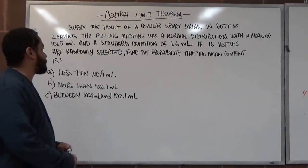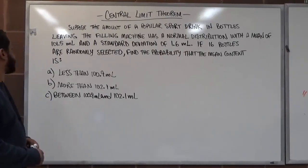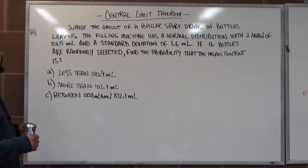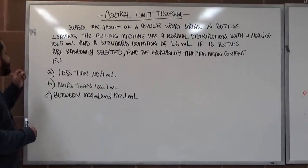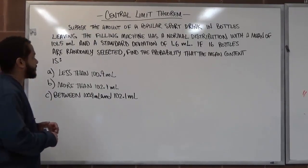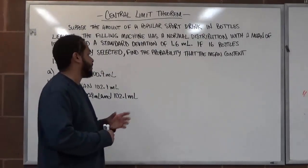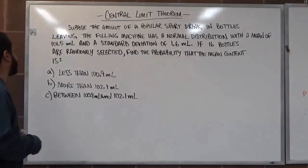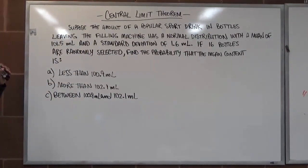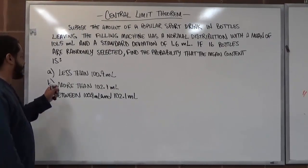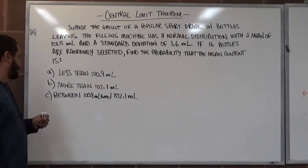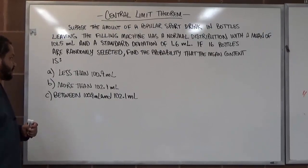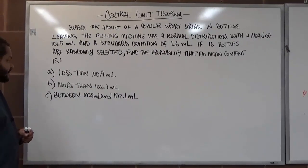Suppose the amount of a popular sports drink in bottles leaving the filling machine has a normal distribution with a mean of 101.5 milliliters and a standard deviation of 1.6 milliliters. If 16 bottles are randomly selected, find the probability that the mean content is: A, less than 100.9 milliliters; B, more than 102.1 milliliters; and C, between 100.9 milliliters and 102.1 milliliters.